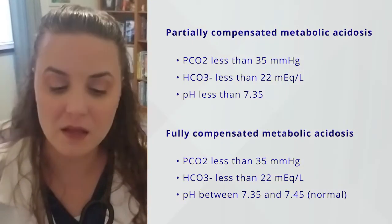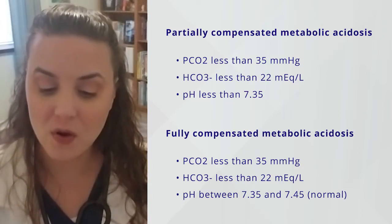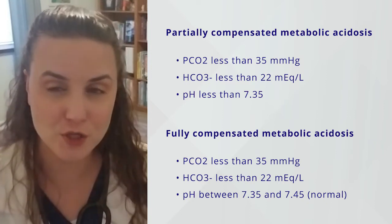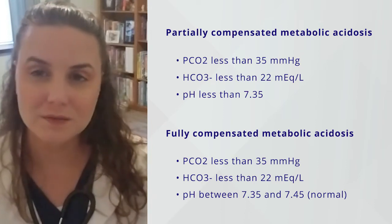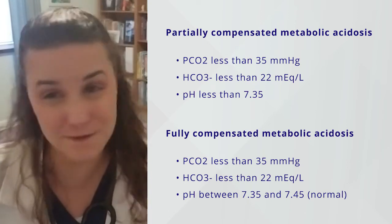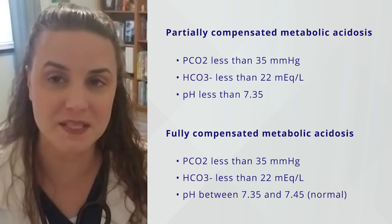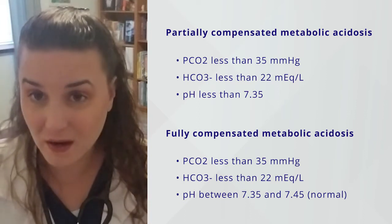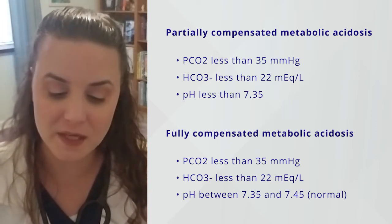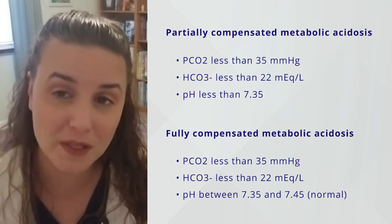So what does the body do to try to combat this and restore homeostasis? It's going to compensate with the lungs. So if you have a low bicarb — less than 22 — a low pH less than 7.35, and a low partial pressure of carbon dioxide less than 35, the lungs are trying to compensate. But because the pH is still low, it's not fully compensated — so it's partially compensated metabolic acidosis. The bicarb is on the same side as the pH, it's what's making it acidic.